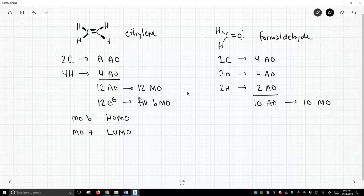If we count the electrons in formaldehyde—two, four for the sigma bonds, six, eight, and four more for the lone pairs—we have 12 electrons. That's going to fill six MOs. Just like ethylene, molecular orbital six will be the highest occupied molecular orbital (HOMO), and MO7 will be the lowest unoccupied molecular orbital (LUMO).